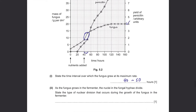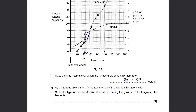Next: as the fungus grows in the fermenter, the nuclei in the fungal hyphae divide. State the type of nuclear division that occurs during the growth of the fungus in the fermenter. It's mitosis, because it's related to growth.